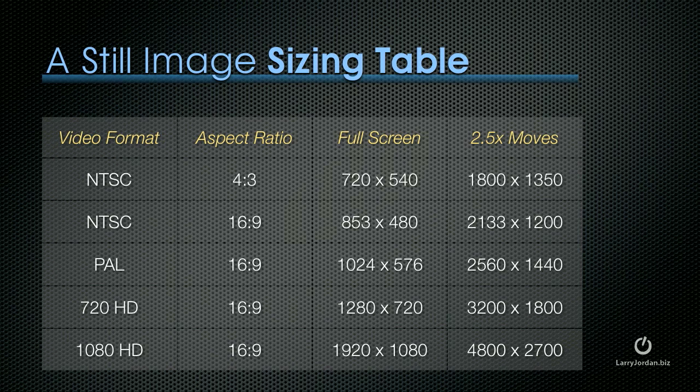If all you want is a high quality image that doesn't move — no zooming or panning — then set it to the numbers based on the full screen column. If you want to do moves on the image, what are called Ken Burns effects, where you're zooming in or out or panning left, right, or up or down, then you want to make the image larger than full size so that when you zoom in you never exceed 100% scale. Your image will never look good when scaling is greater than 100%. Fat pixels look blurry, grainy, and terrible.